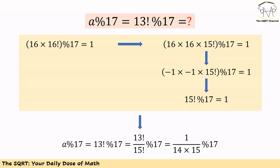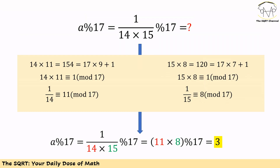Since 15 factorial mod 17 is 1, we can divide 13 factorial mod 17 by it. Doing so, a mod 17 equals 13 factorial over 15 factorial mod 17. Cancelling 13 factorial from numerator and denominator, we get a mod 17 equals 1 over (14 times 15), mod 17.